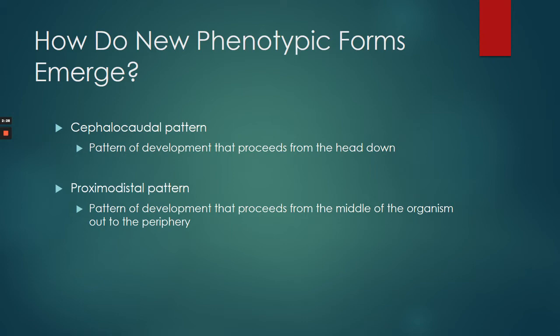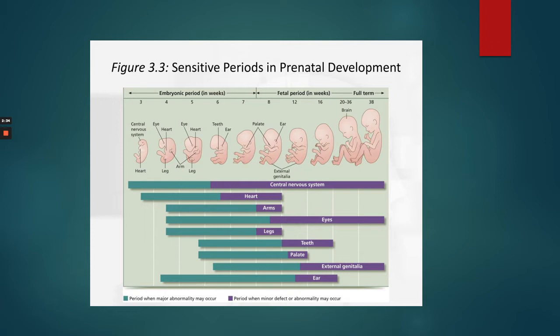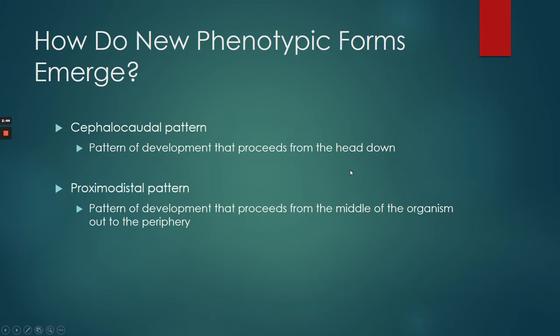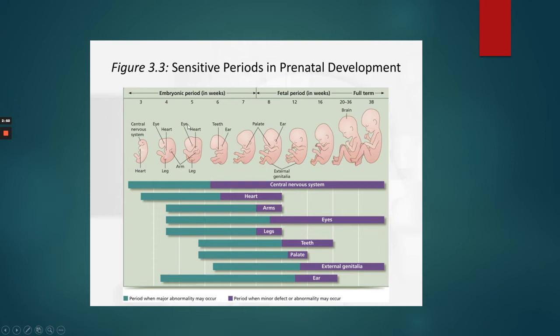You can actually see this — the head is big here and it takes a while for the body to form, so that's the cephalocaudal pattern. Proximal-distal would probably be better illustrated by a cross-section with the fetus facing us.